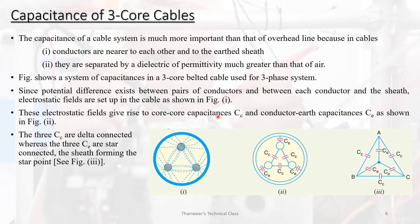Next, we consider the three-core cable. The capacitance of a cable system is much more important than that of overhead lines. This is because in cables, conductors are nearer to each other and to earth. The conductors are separated by a dielectric of permittivity much greater than that of air. Since potential differences exist between pairs of conductors and between each conductor and the sheath, electrostatic fields are set up in the cable.